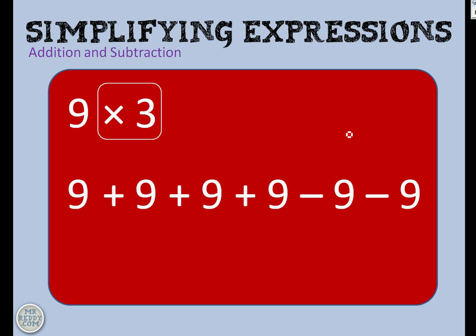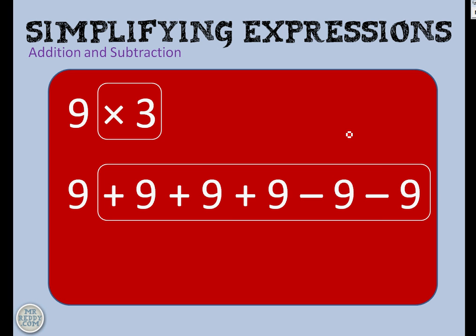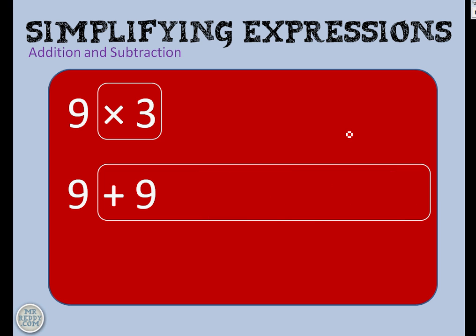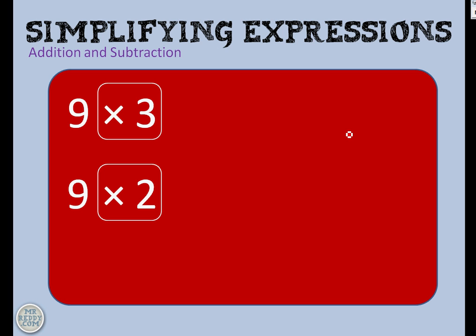Here's another one: 9 add 9 add 9 add 9, but then take away 9, take away 9. We can simplify the last four, because if you add 9 and add 9 but then take away 9 and take away 9, you've basically not added anything. So we get rid of them, and we've got 9 add 9, which is 9 times 2 if you want to simplify it.